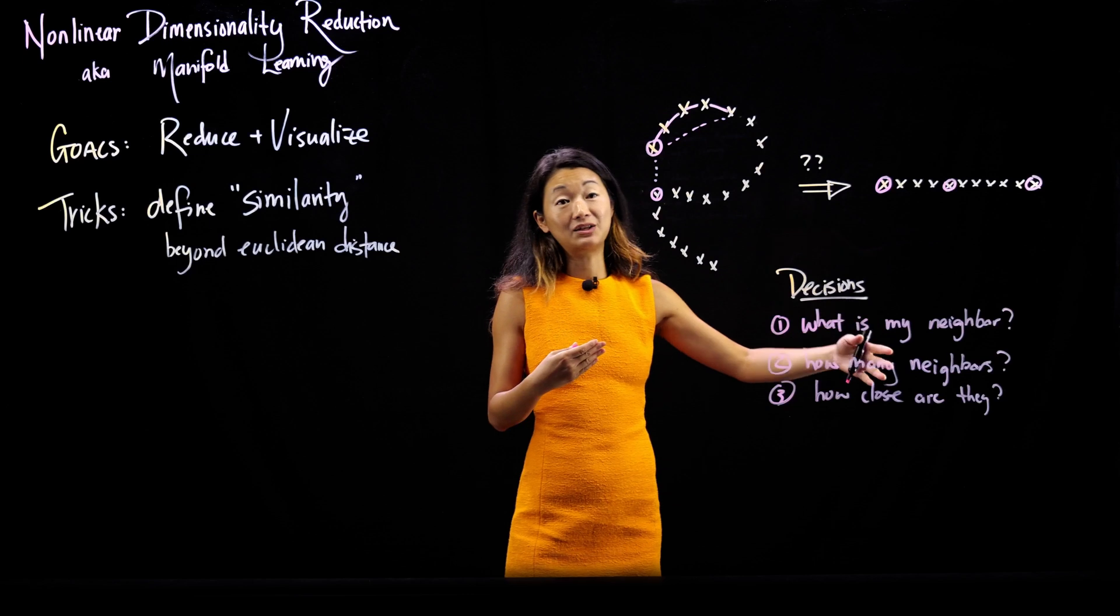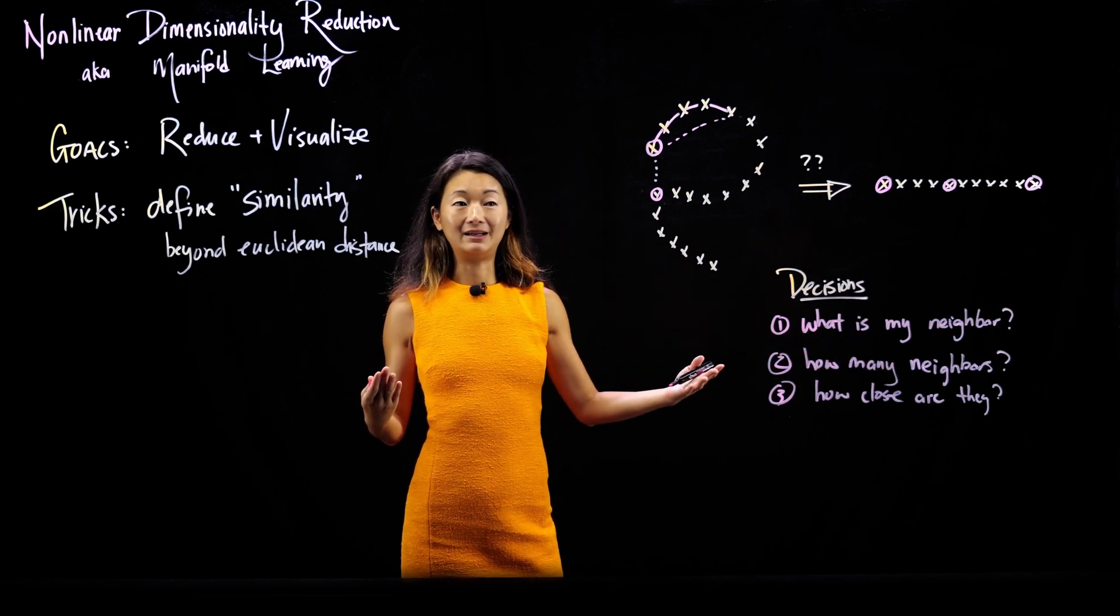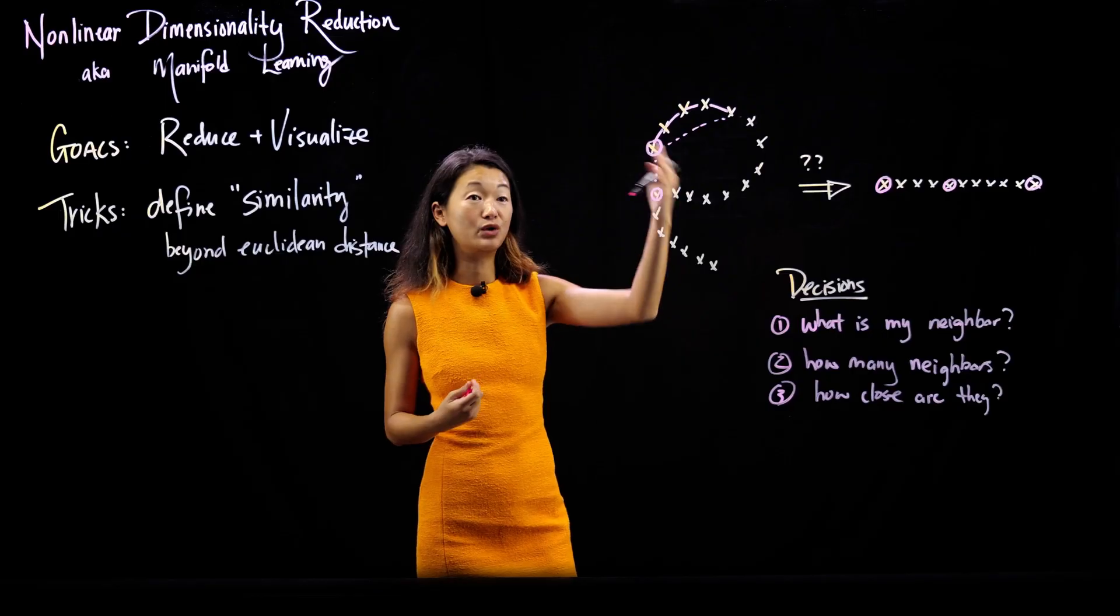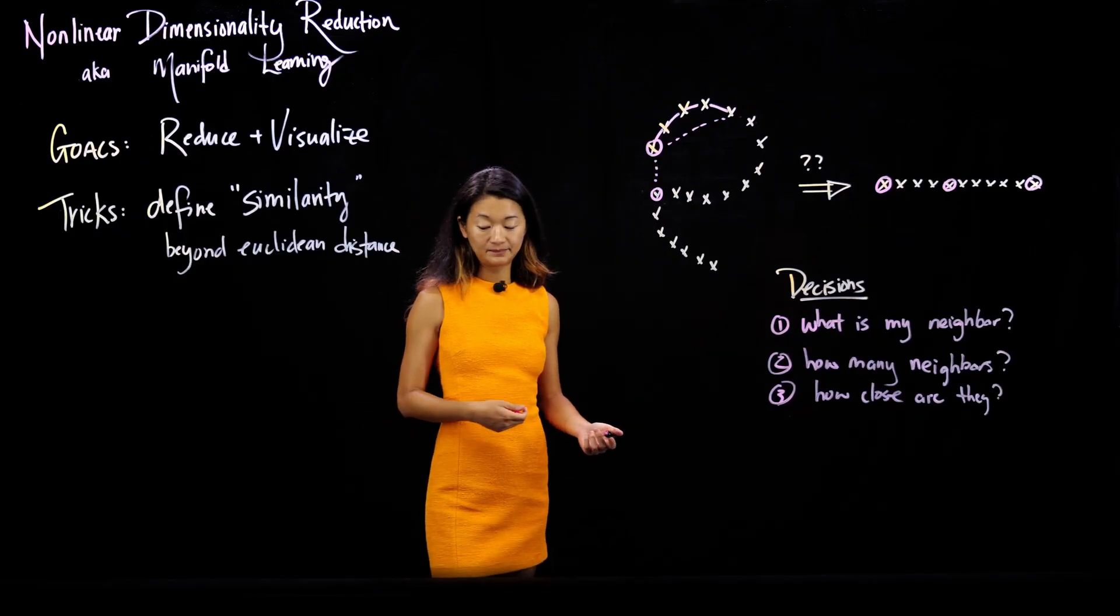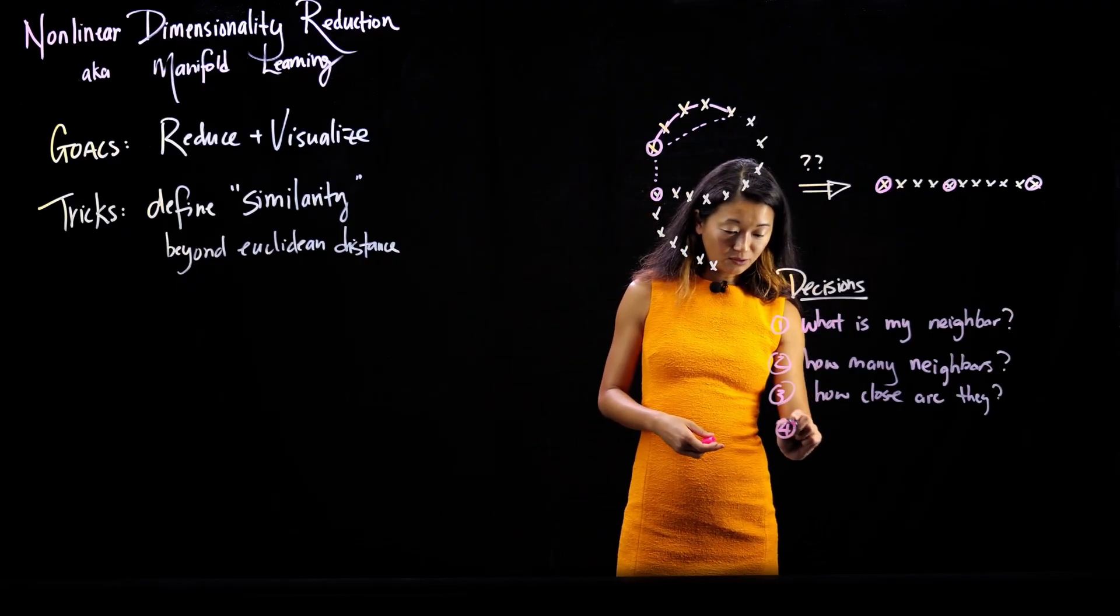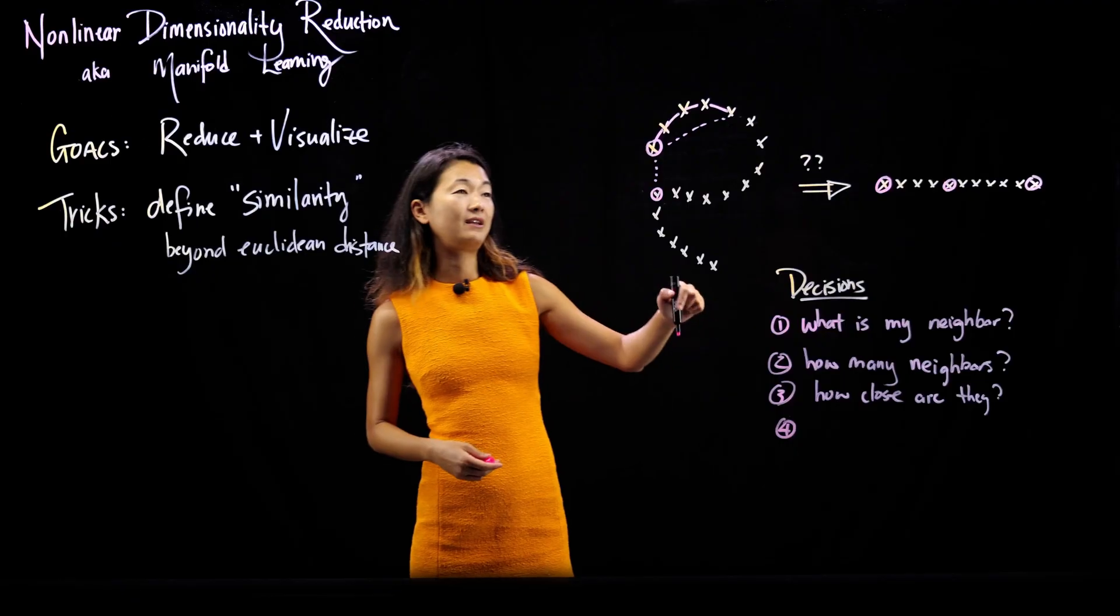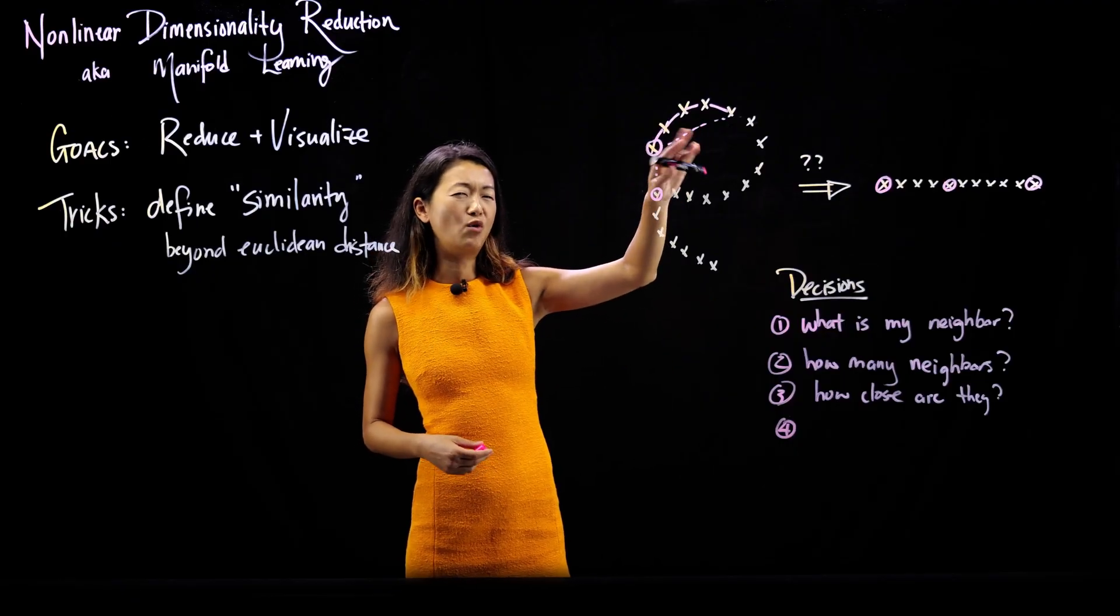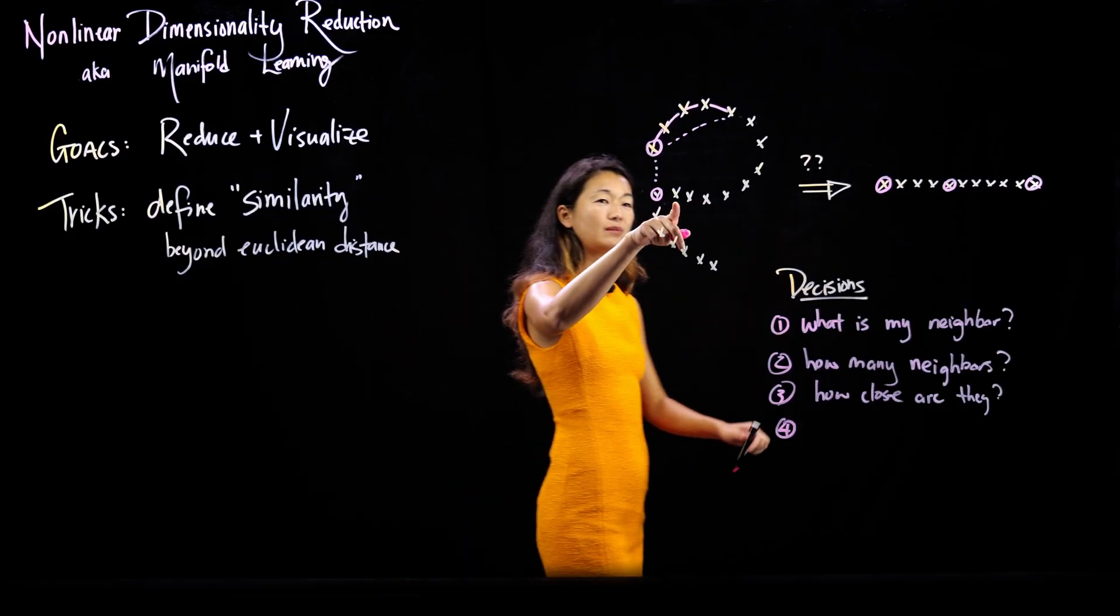Basically, we then make decisions about what counts as similar and what are my neighbors in ways that keep into account more structure in the data set than are apparent by computing these Euclidean distances. And then the corollary of the set of decisions we have to make is that if I think my close-by neighbors are somehow more important, like more and more important than my faraway neighbors, how do I actually ignore these neighbors?